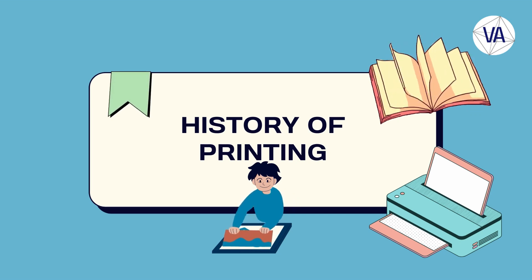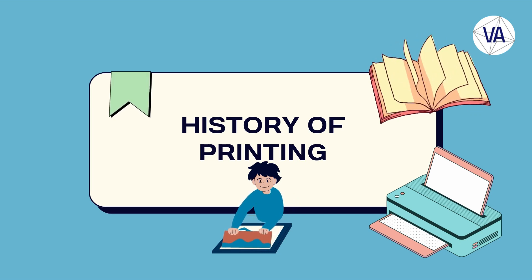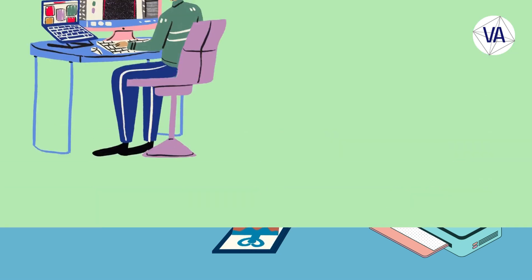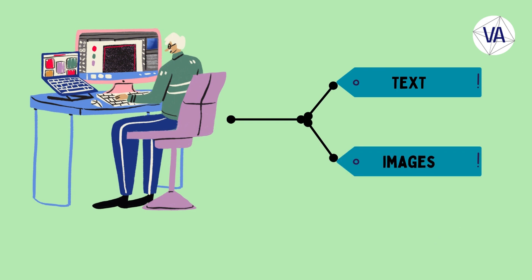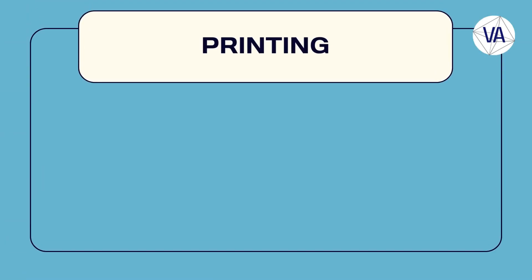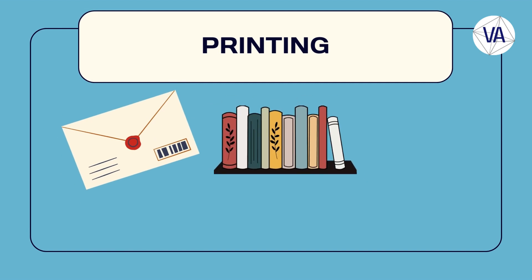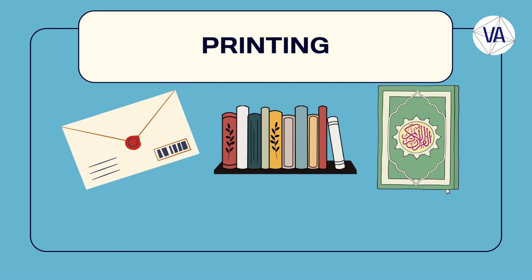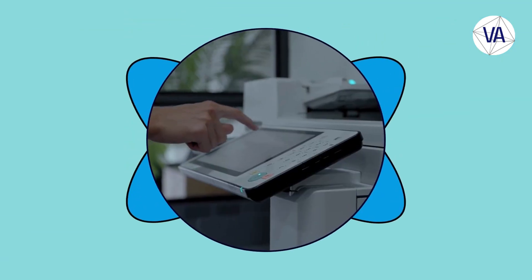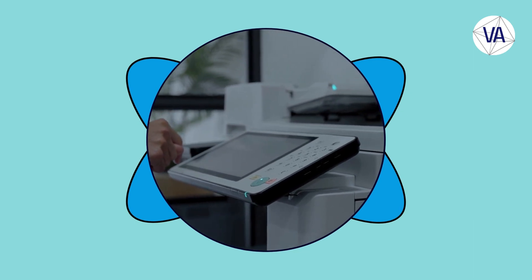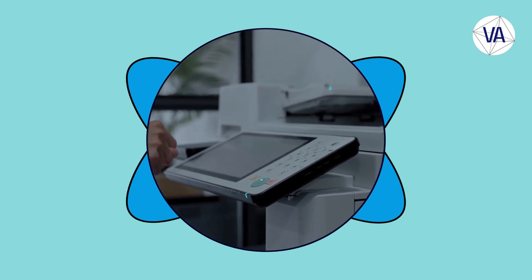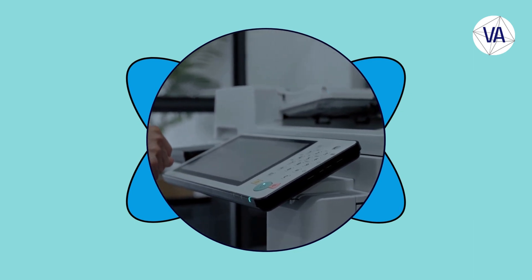Hello and welcome to this video on the history of printing. Printing is the process of reproducing text and images on a material such as paper, cloth, or metal. Printing has been a vital tool for communication, education, and culture throughout human history. In this video, we will explore the origins, development, and impact of printing in different regions and periods.